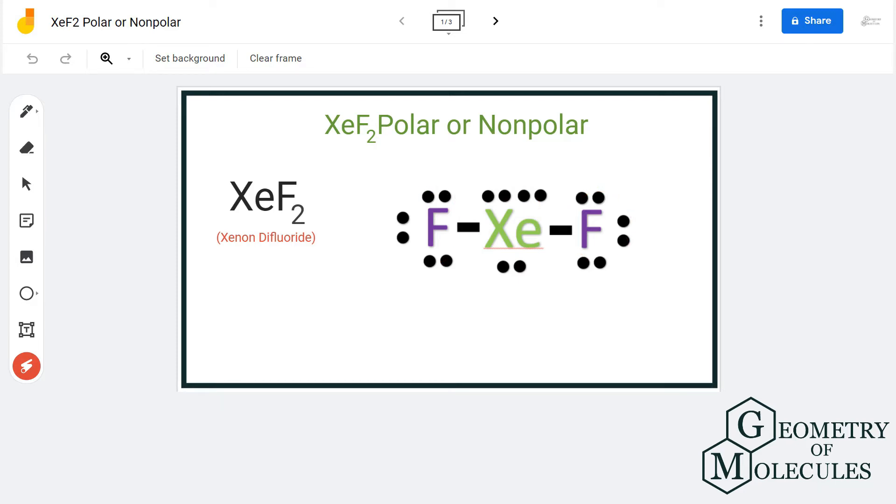So here is the Lewis structure of xenon difluoride, in which each fluorine atom is sharing one valence electron of xenon to complete its octet. Here we can see that there is a symmetric distribution of electrons among atoms. There is no asymmetry in that, and because there is no asymmetry, the dipole moments will also be cancelled out.